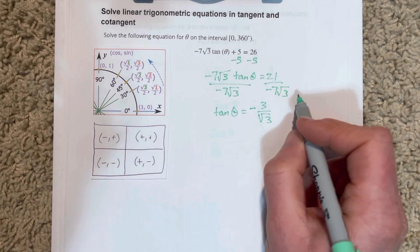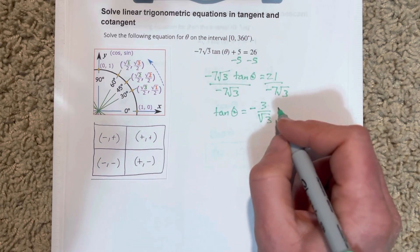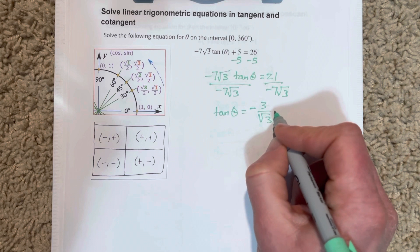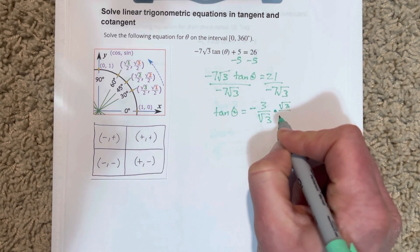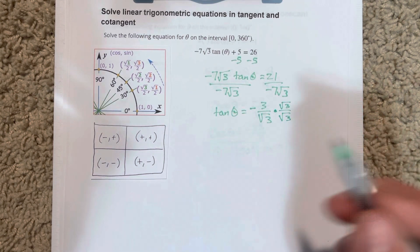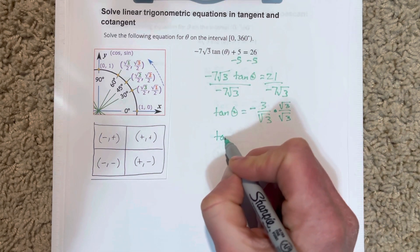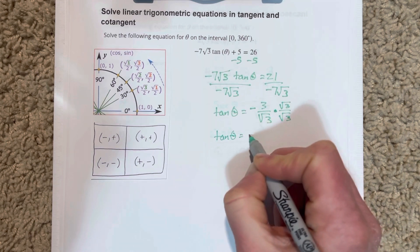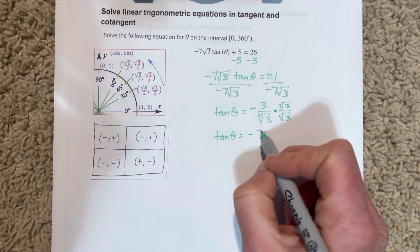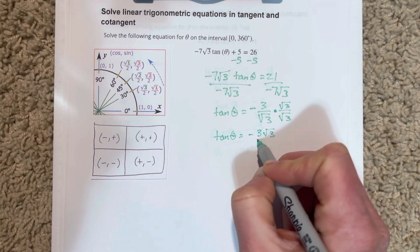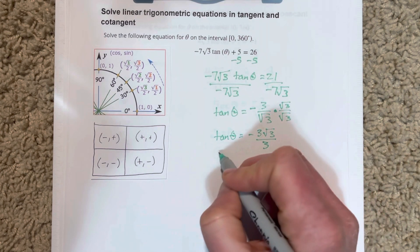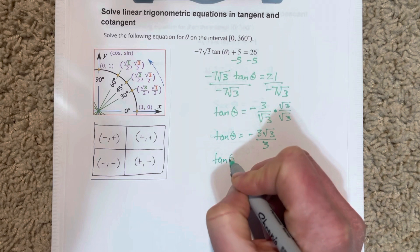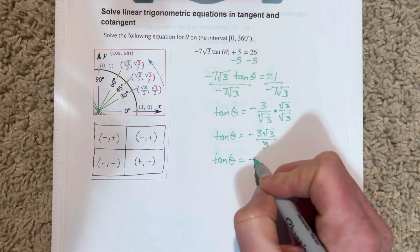I'm going to rationalize this denominator by multiplying by root 3 over root 3. When we do that, we end up with tan theta equals negative 3 root 3 over 3. The 3s cancel, so tan theta equals negative root 3.